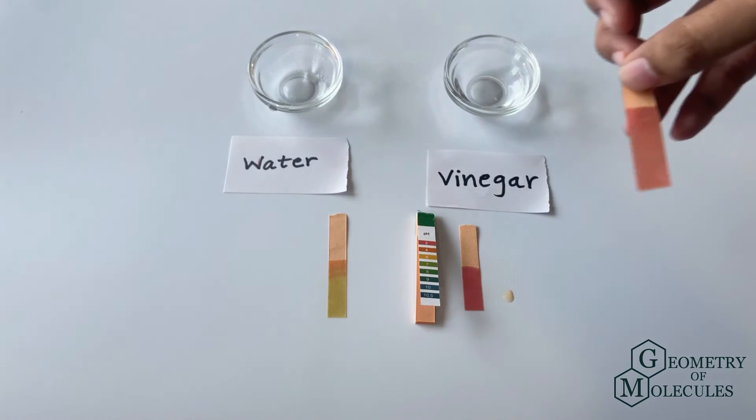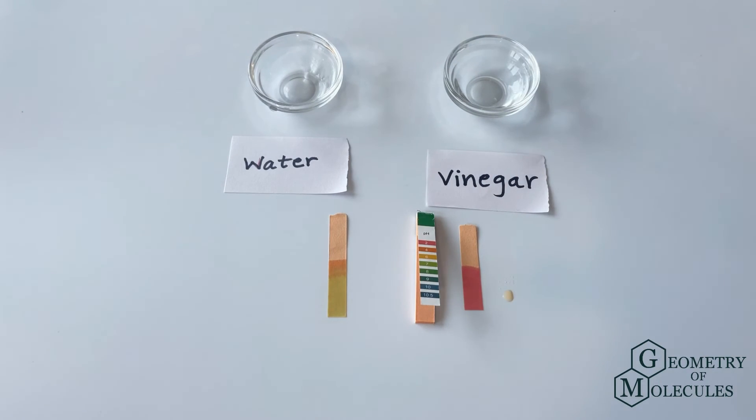Also, white distilled vinegar, the one that we used here, is best suited for household cleaning and typically has a pH of around 2.5.